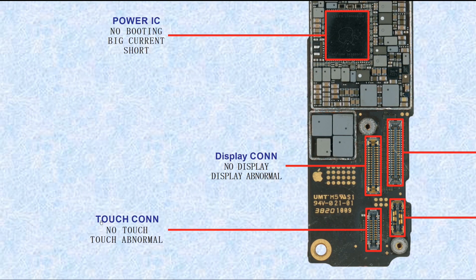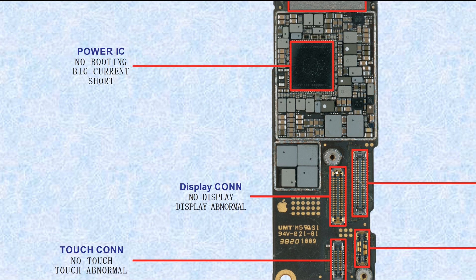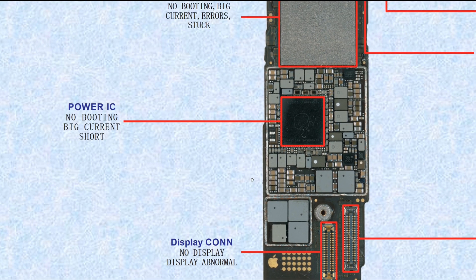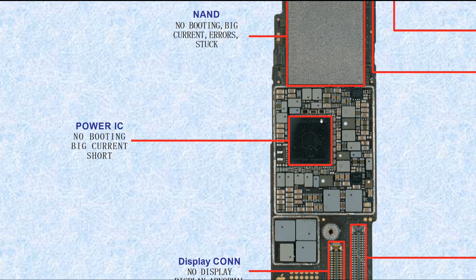This one is the touch connector — if broken, it causes no touch or touch abnormal. This connector is the display connector — if broken, it causes no display or display abnormal. This one is the power IC, PMU — power management unit. If broken, it causes no booting, big current, or short.